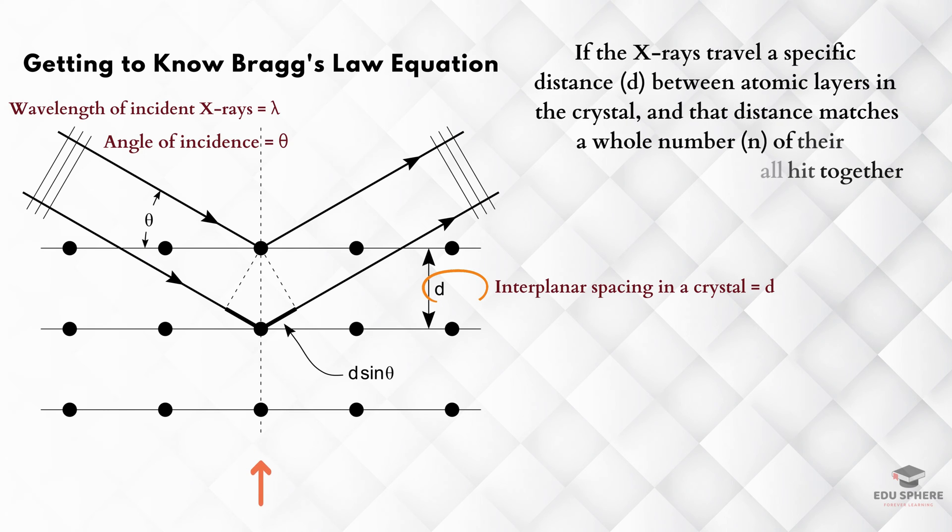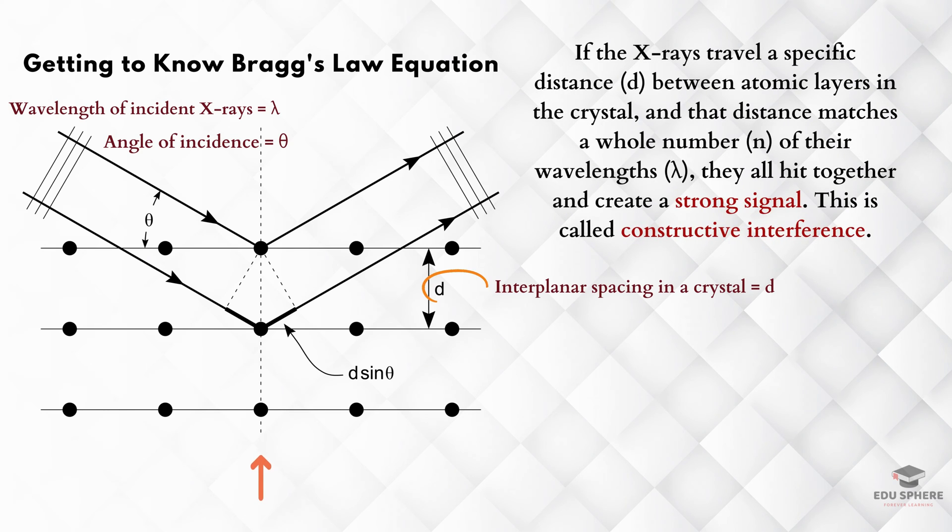If the X-rays travel a specific distance between atomic layers in the crystal, and that distance matches a whole number of their wavelengths, they all hit together and create a strong signal. This is called constructive interference. You can think of it like soldiers marching in step, and their movements amplifying each other.